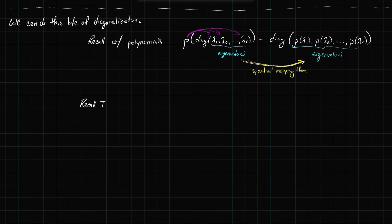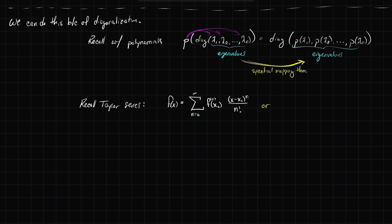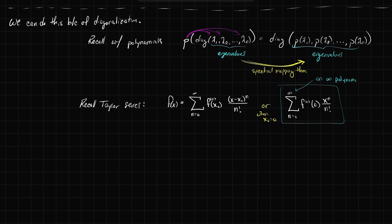Let's go back to Taylor series. Recall that Taylor series can represent any function which is analytic — a good variety of functions as the nth derivative at x_0, times x minus x_0 to the nth power divided by n factorial, summing from n=0 to infinity. Or when x_0 is zero, you get the nth derivative at zero times x^n divided by n factorial. This is really just an infinite polynomial — a limit of polynomials arriving at f.